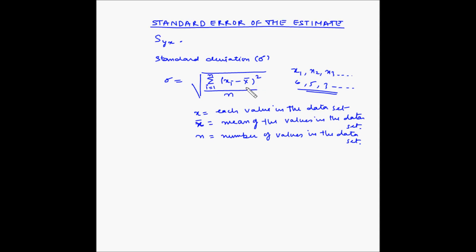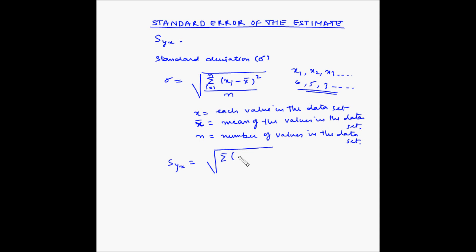Basically, to find the standard deviation, each value of the data set is subtracted by the mean x-bar, then each resulting value is squared and all of them are added. Now for the standard error of the estimate, S_yx equals the square root of the sum of (y_i minus y_i-dash) squared, divided by n minus 2.